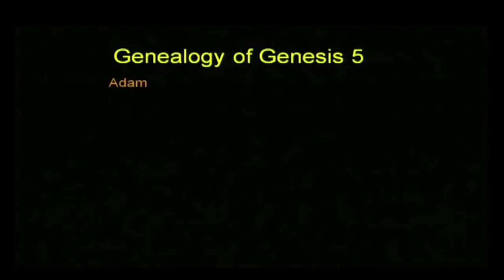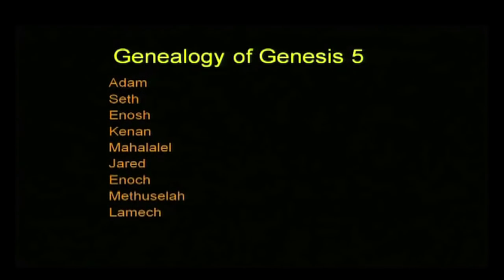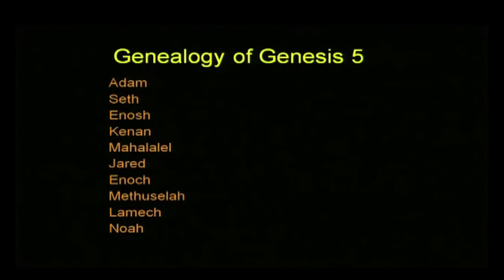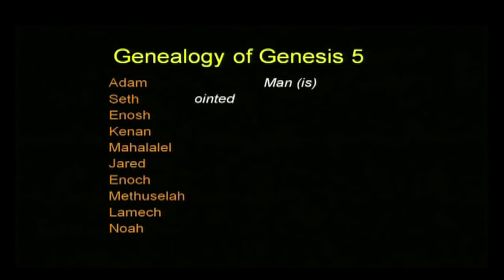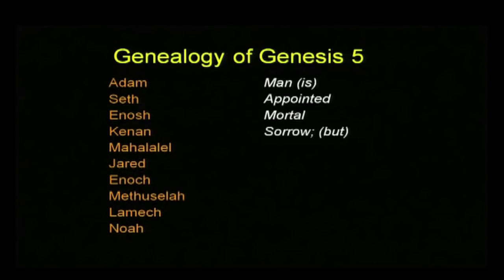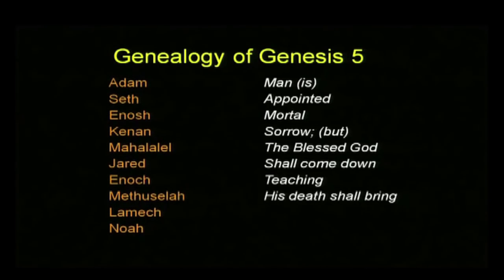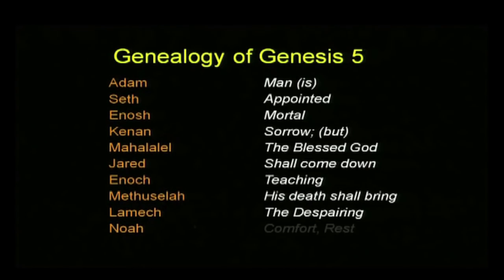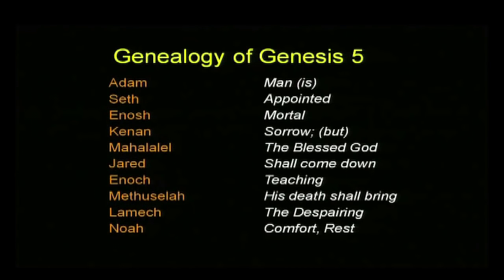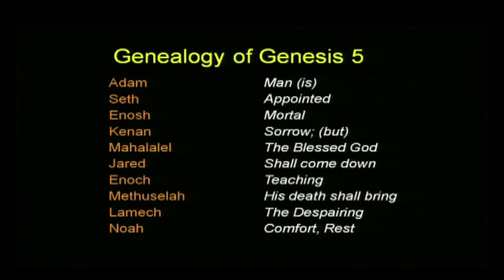So we have a genealogy of ten people: Adam, Seth, Enosh, Kenan, Mahalalel, Yared, Enoch, Methuselah, Lamech, and Noah. Let's translate it rather than transliterate it. Man appointed mortal sorrow. But the blessed God shall come down, teaching that his death shall bring — whose death? God's death. Man has appointed mortal sorrow, but the blessed God shall come down, teaching that his death shall bring the despairing comfort or rest.